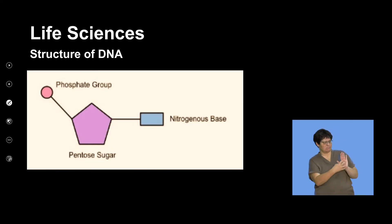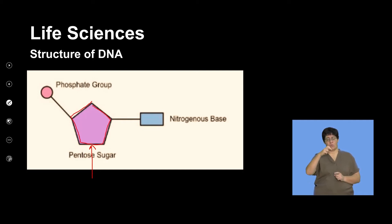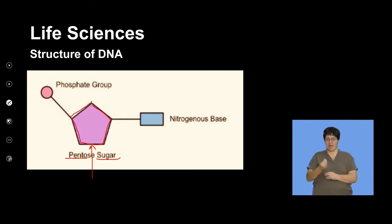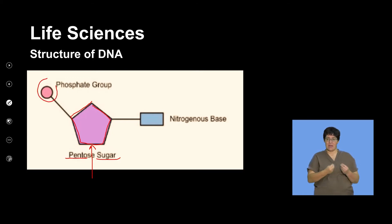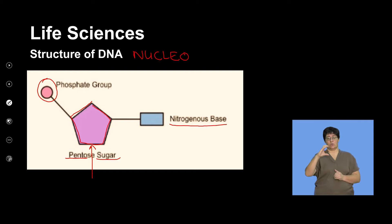In a diagrammatic representation: the nucleotide contains a single sugar molecule, often drawn as a pentagon because it is a five-carbon sugar — a pentose sugar. Unlike glucose, which is a hexose sugar, DNA contains a pentose sugar. It also has a phosphate group and nitrogenous bases. These three components make up a single nucleotide — the simplest building block of DNA.